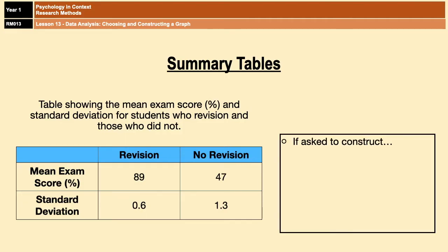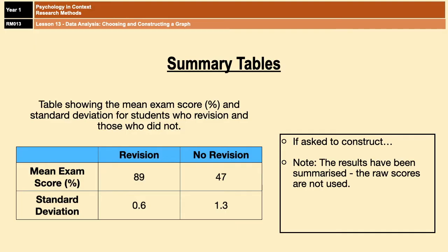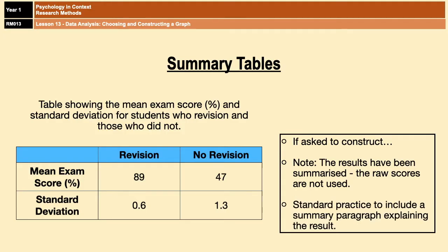However, it has become very popular in exams to include long answer research methods questions, and it's possible that a summary table could appear in one of those. You could get asked to present a set of results in a summary table as part of research methods essays, or even as part of a question asking you to write the results section for a psychological report. It's important to note that summary tables do not simply use raw scores, but scores that have been converted into descriptive statistics — hence why they're called a summary table. Also, it's standard practice to include a summary paragraph beneath the table explaining the results.